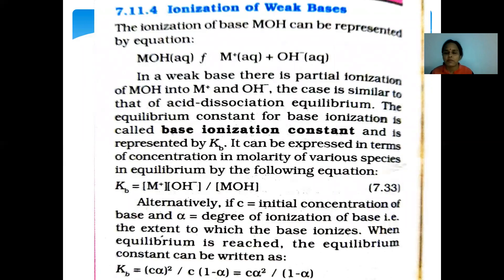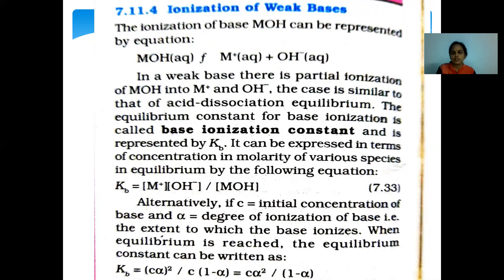Next, ionization of weak bases. The ionization of base MOH is represented by: MOH ⇌ M⁺ + OH⁻. The base ionization or dissociation constant is represented by Kb: Kb = [M⁺][OH⁻] / [MOH]. If C is the initial concentration of the base and alpha is the degree of ionization, then Kb = Cα² / (1 - α).